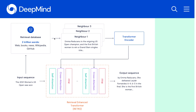Given the input sequence, the retrieval component fetches a number of relevant paragraphs from this database using approximate nearest neighbor search. These paragraphs are then passed to a frozen transformer encoder model, which produces an embedding for each of those paragraphs. This information is provided as extra input to the standard language model setup, conditioning the model on facts extracted from the database.